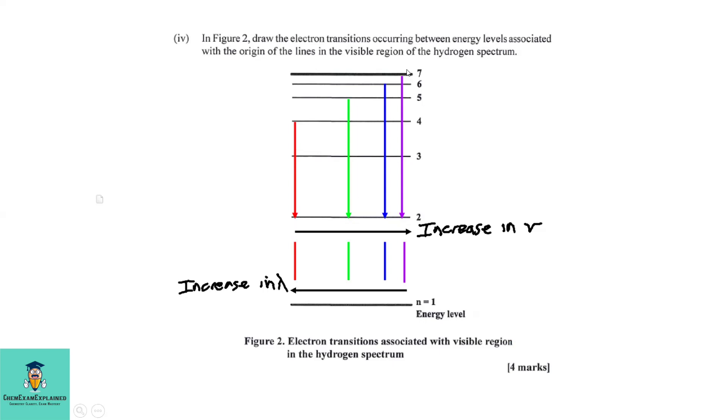So, the higher you are, the closer the lines will be, suggesting that the frequency is high and the wavelength is short and the lower you fall from 4 to n=2, that is suggesting that the wavelength is long and the frequency is low.